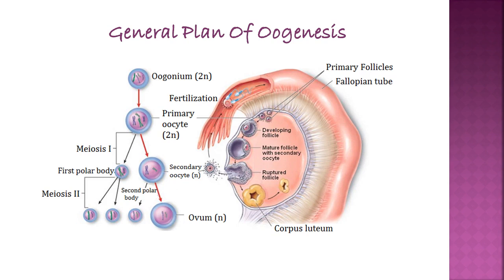The first polar body generally degenerates as soon as it is formed, but if it persists then it also undergoes meiosis second to form two second polar bodies. The secondary oocyte also undergoes meiosis second and asymmetrical cytokinesis, forming a second polar body and one larger cell called the ovum. This means that one primary oocyte forms three polar bodies and one large ovum. This is the general plan of oogenesis.